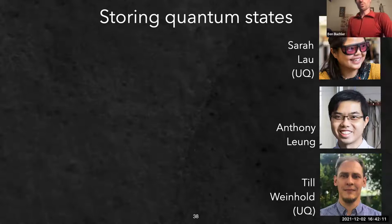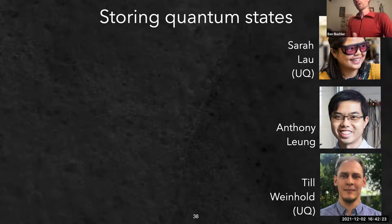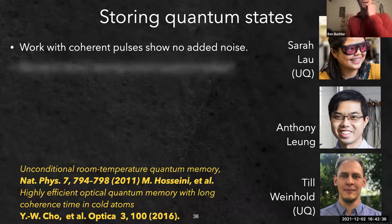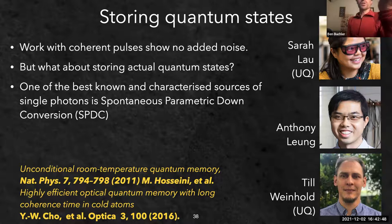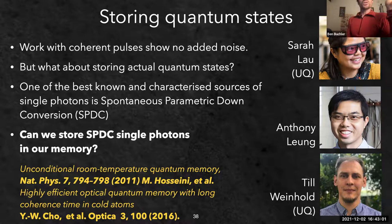For storing actual quantum states: all our experiments so far have been with coherent states or weak coherent states with a few photons to show quantum compatibility. We've stored coherent states of order one photon and confirmed that on recall we haven't added any photons or noise. Now we want to store actual single photons. One of the best-characterized sources of single photons is spontaneous parametric down-conversion (SPDC), using a non-linear crystal to split a photon of frequency 2ω into two photons each of frequency ω.